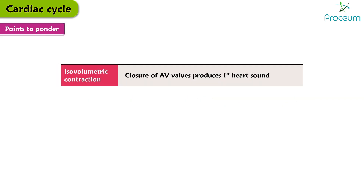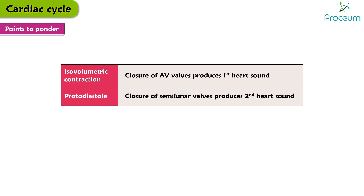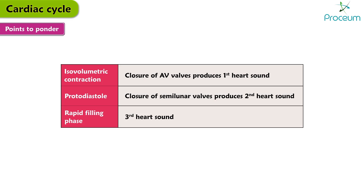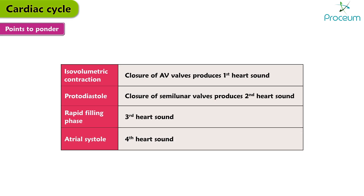Summary of heart sounds: isovolumetric contraction — closure of atrioventricular valves produces the first heart sound. Protodiastole — closure of semilunar valves produces the second heart sound. The rapid filling phase causes the third heart sound. Atrial systole against a stiff ventricle causes the fourth heart sound.